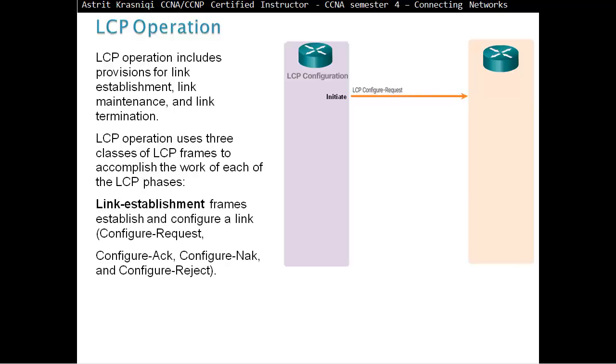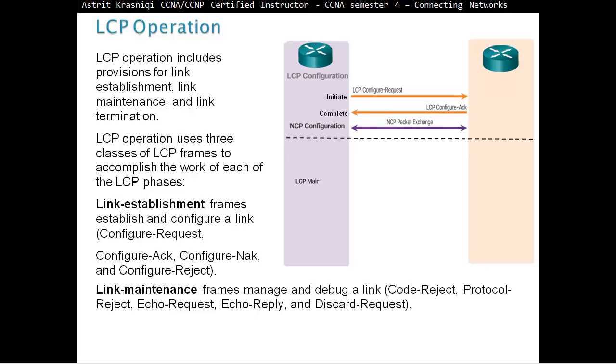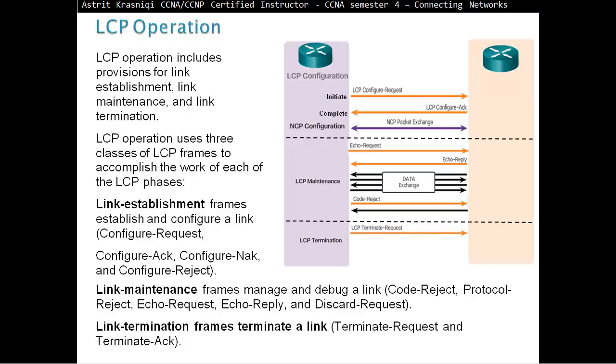So, first is link establishment. Frames establish the configuration of link like configure request, configure acknowledgement, configure NAC, configure reject. Link maintenance. So, frames manage to debug the link. Like for example, while we exchange the NCP data, we are maintaining the link, making sure that the quality has not degraded. And link termination frames, terminates the link, terminates the request and terminates acknowledgement.